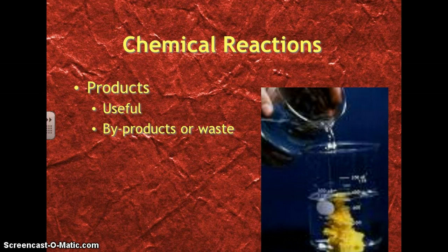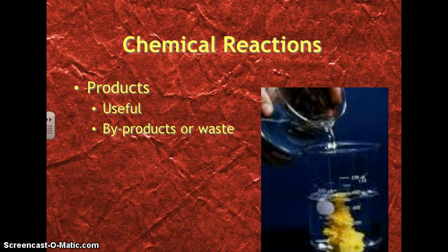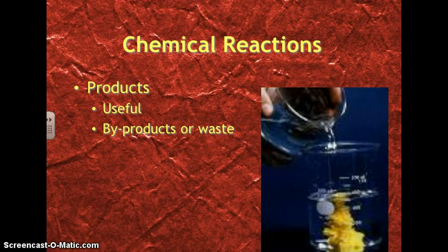When we have a chemical reaction, we have products. So, we talked about reactants are the first part, and the products are the outcome of the chemical reaction. And products can be divided into two categories. They can be useful things, things that we wanted to get, or they can be byproducts or waste products.